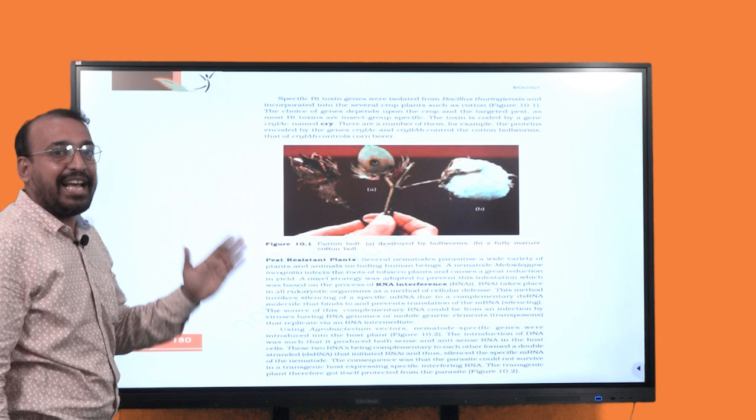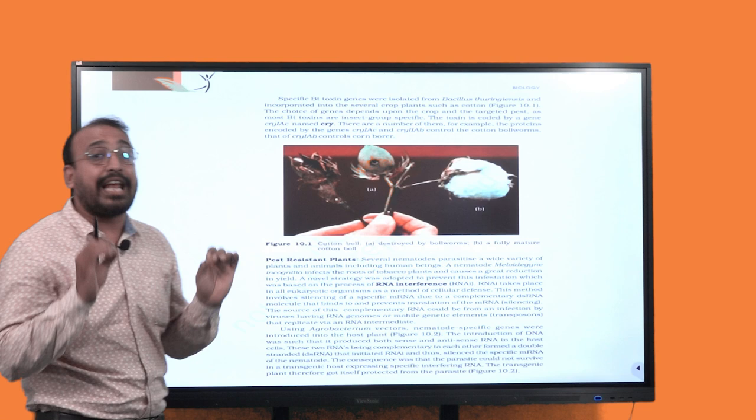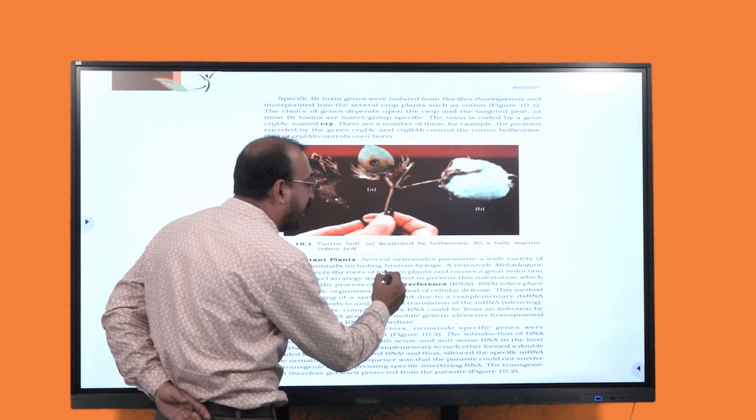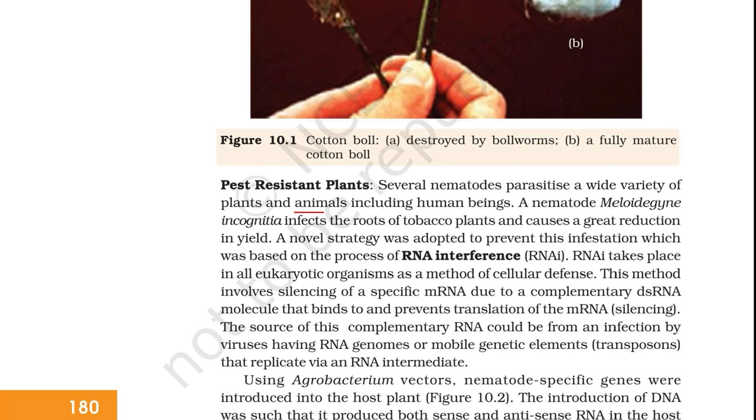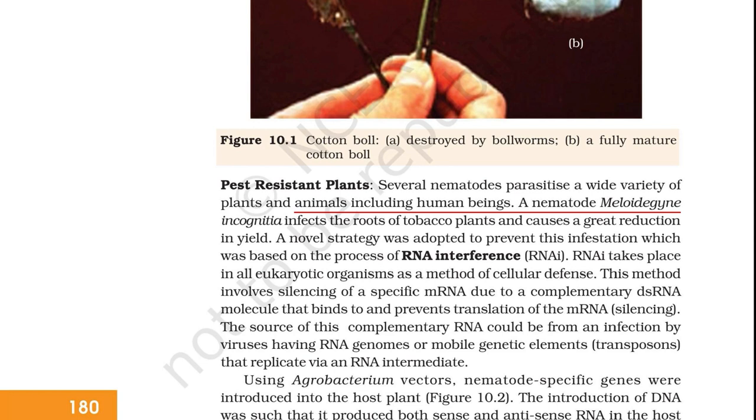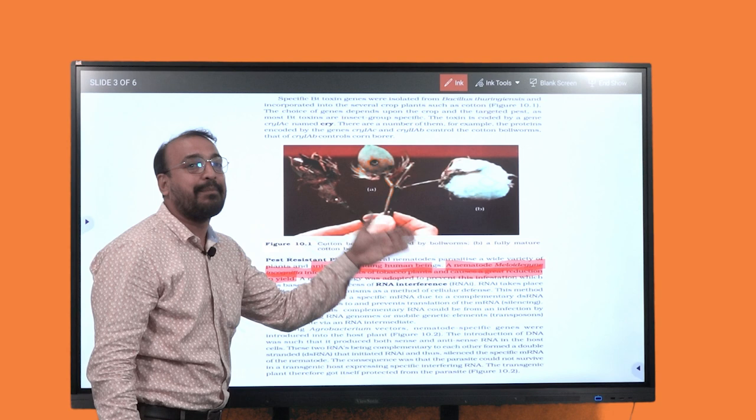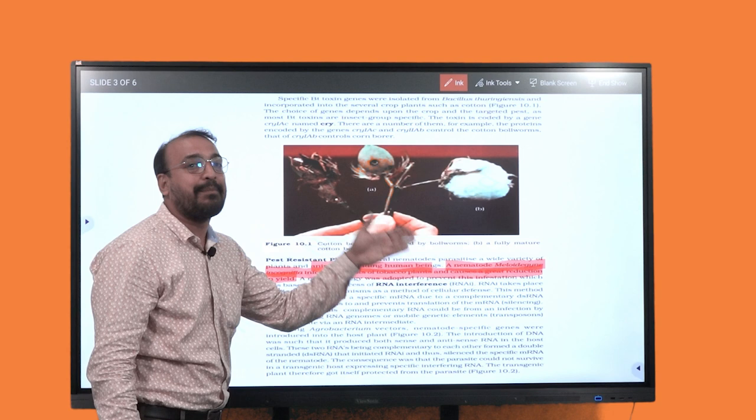So this is in NCERT volume 2 page 180. This is the example of biotechnology application. Animals including human beings are nematodes. Meloidogyne incognita infects the roots of tobacco plants and causes a great reduction in yield. So this is the example of plant parasites.